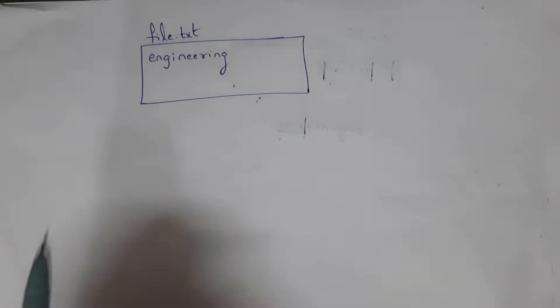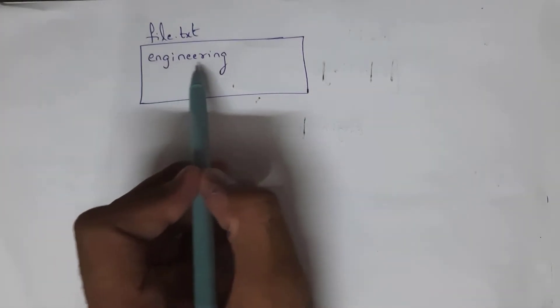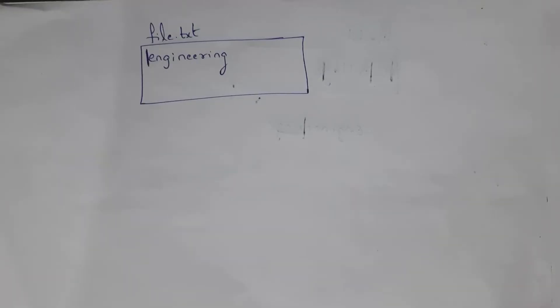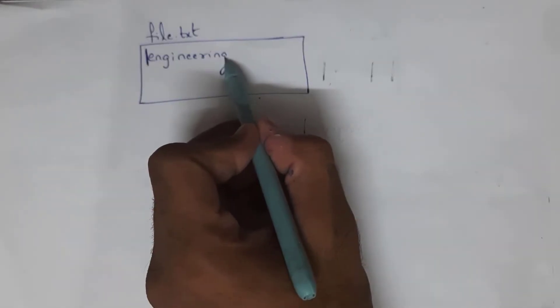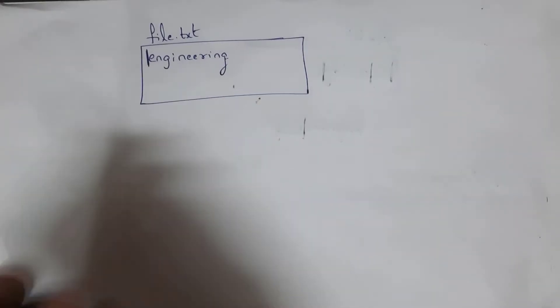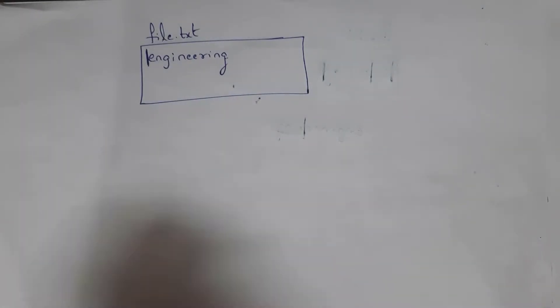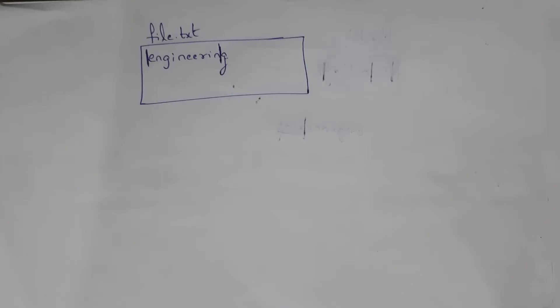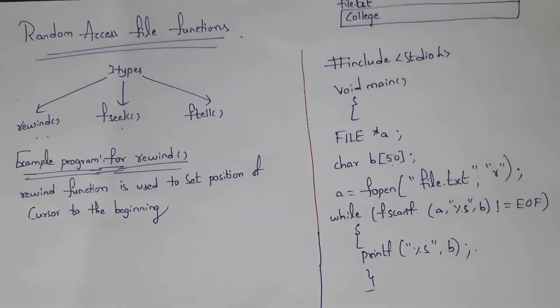For example, this is my file which contains the text 'engineering'. Normally the cursor will be at the starting position, but if you want to place the cursor at any desired position then you need to use random access file functions. For example, if I want to print the last character 'g' as output, I need to place the cursor to the last position.